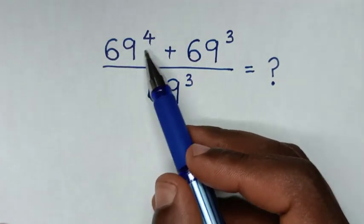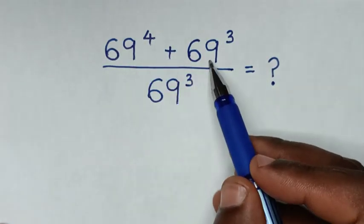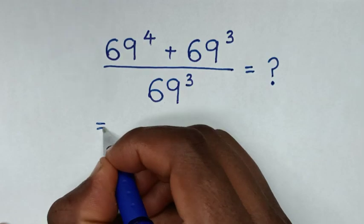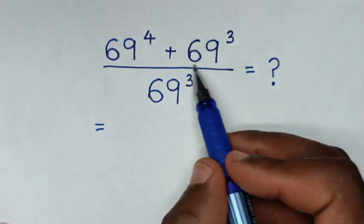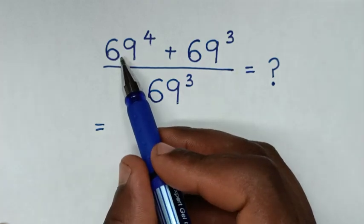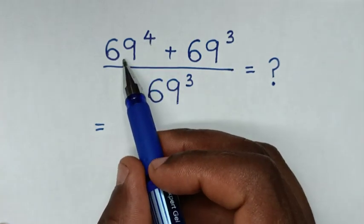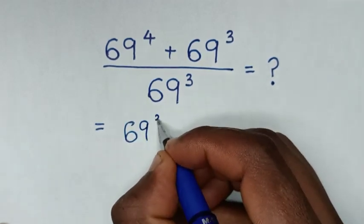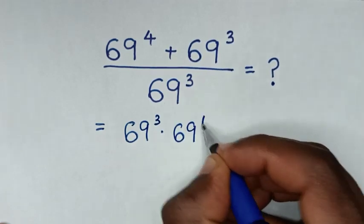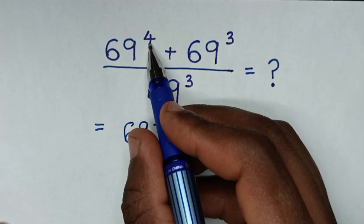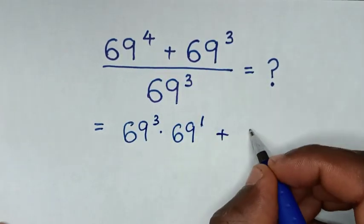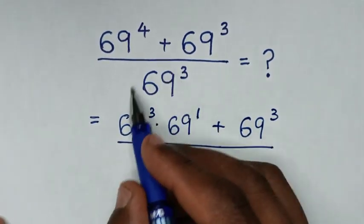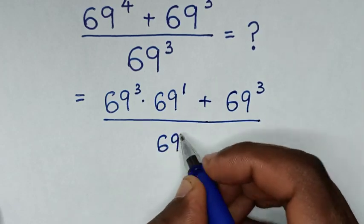Hello. How to solve 69 power 4 plus 69 power 3 over 69 power 3. In the numerator, 69 power 3 is the lowest. So from 69 power 4 we make 69 power 3 in common. This 69 power 4 is the same as 69 power 3 times 69 power 1, since power 3 plus power 1 is power 4. Then plus 69 power 3, over 69 power 3 in the denominator.